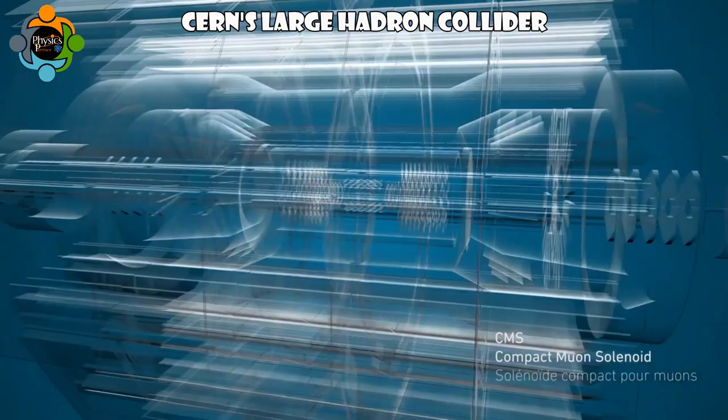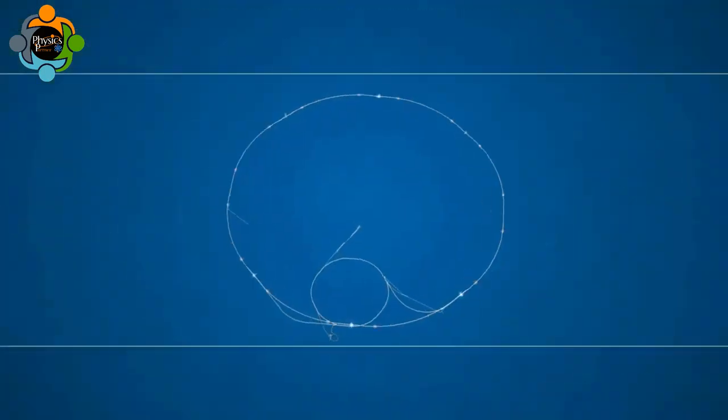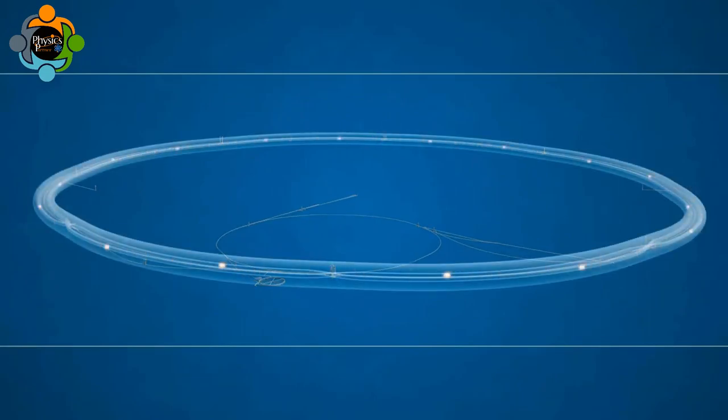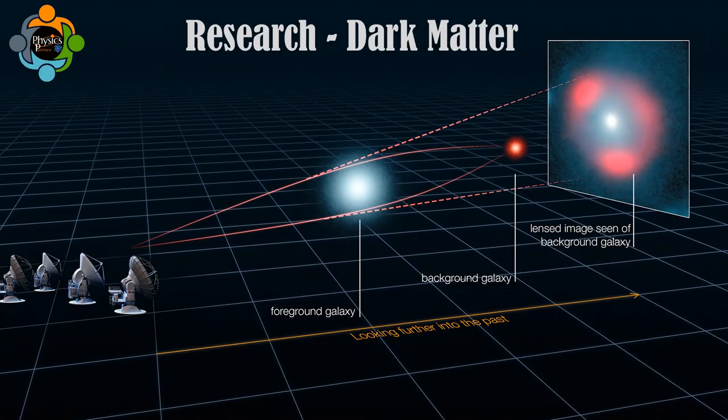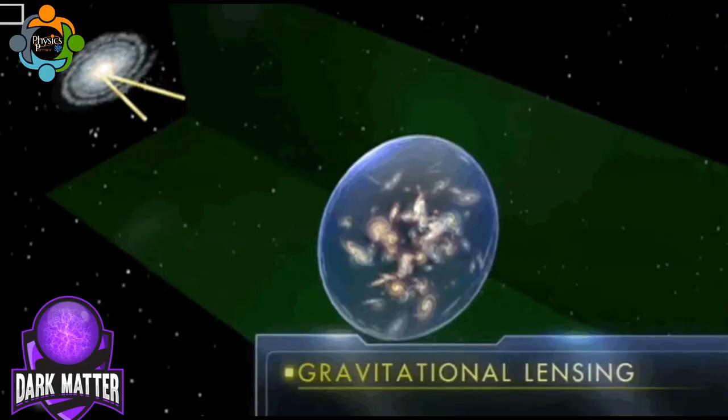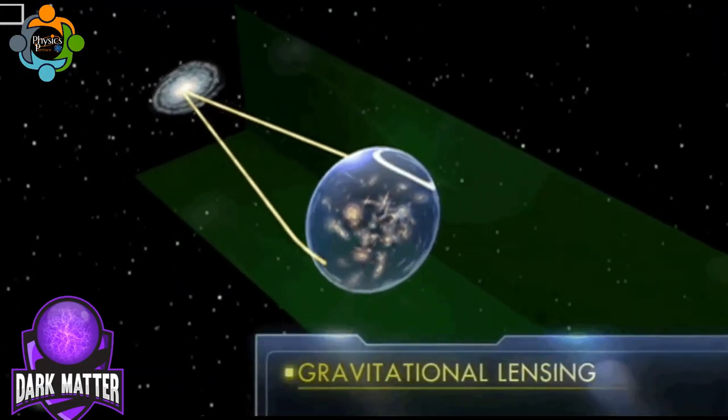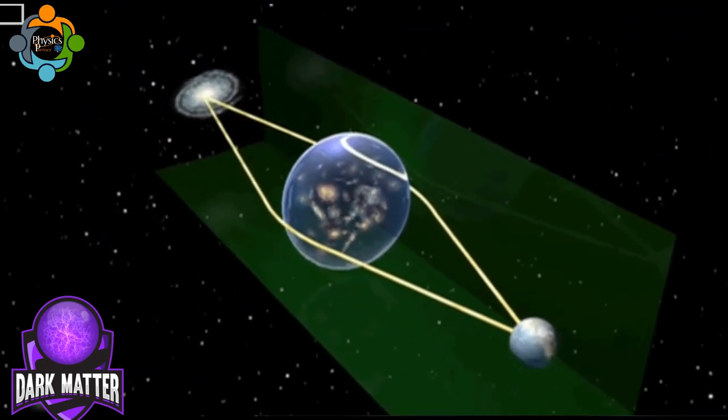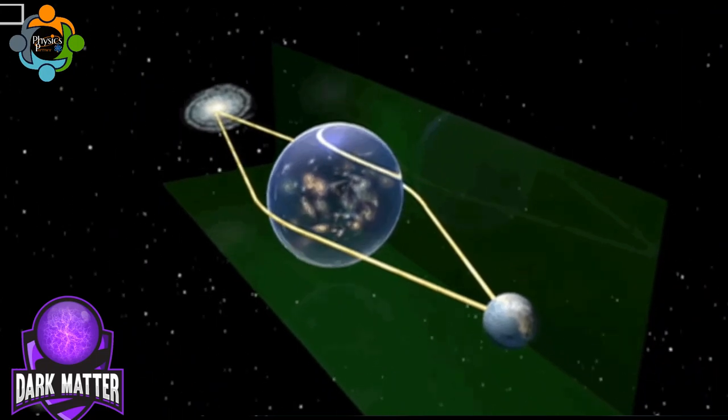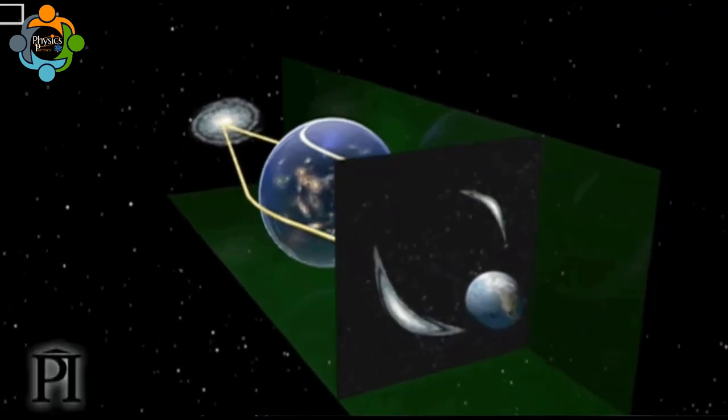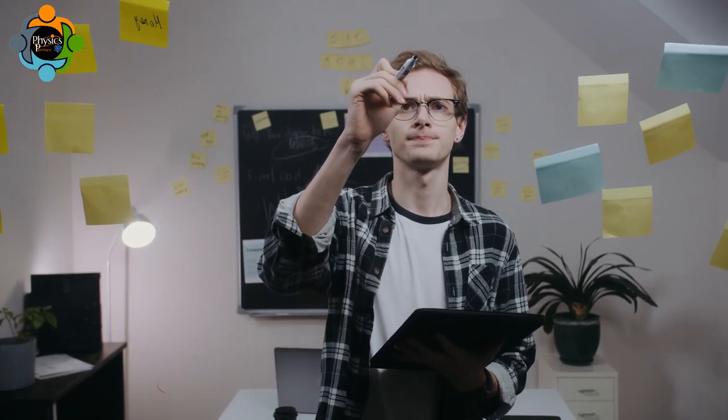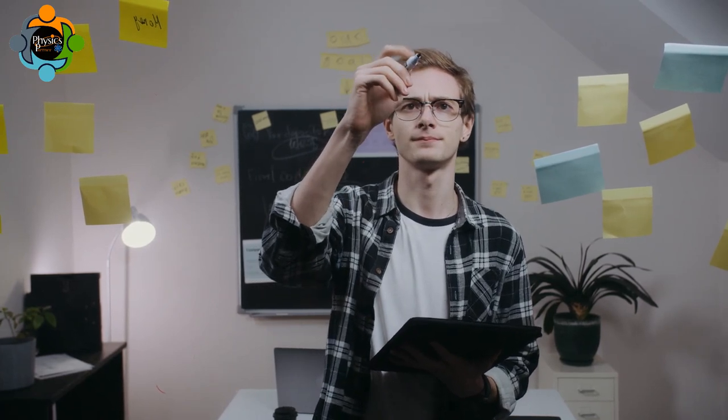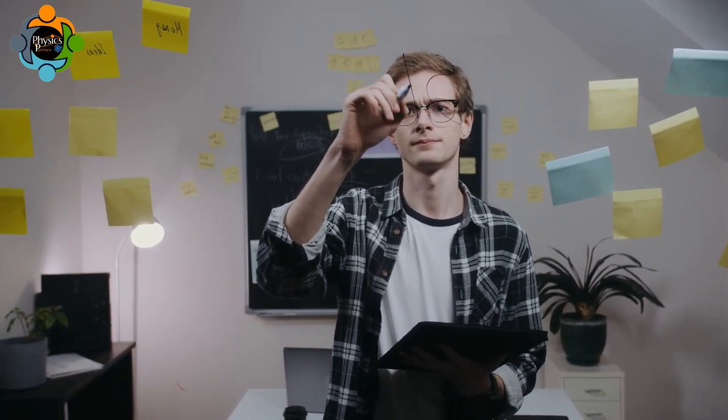Another method is to indirectly detect dark matter through its gravitational effects on visible matter, using techniques such as gravitational lensing. Other experiments are underway to directly detect dark matter particles using sensitive detectors located deep underground. Despite significant efforts, dark matter remains a stubbornly elusive substance, and its true nature and properties remain a mystery.